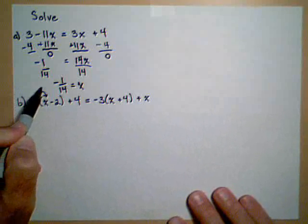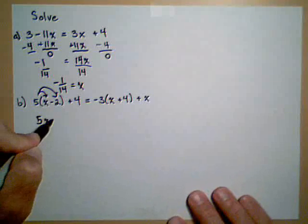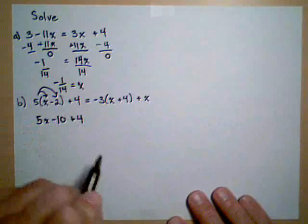So first thing, let's distribute the 5 to both the x and the 2. So that gives us 5x minus 10 plus 4. And we'll combine that in the next step.